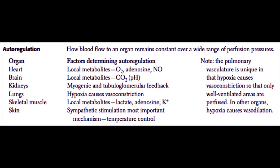In skeletal muscle, it's also local metabolites such as lactic acid, adenosine, and potassium that cause vasodilation. In the skin, the cutaneous circulation is primarily dictated by sympathetic and parasympathetic stimulation, and this is very important for temperature autoregulation.